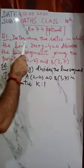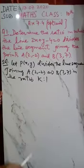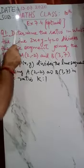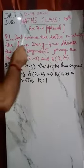Good morning students. Today we are going to start the optional exercise 7.4. I am not taking exercise 7.3 because area of triangle has been deleted from your syllabus.